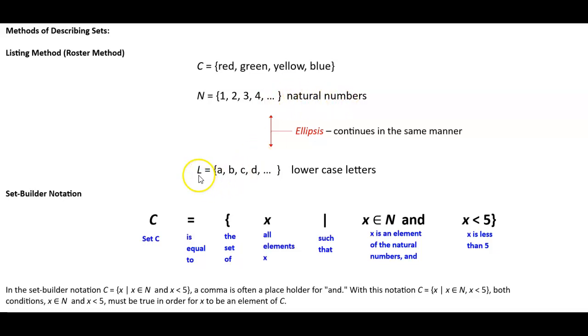Same thing with here, L, which is equal to the set a, b, c, d, dot dot dot with lowercase letters. Now if you notice here, those three dots represent an ellipsis, which continues in the same manner. So therefore, you're just shortening writing out the set by using those three dots.